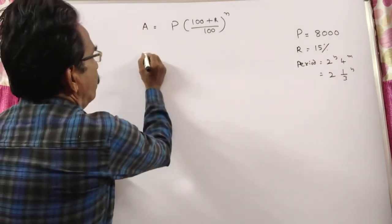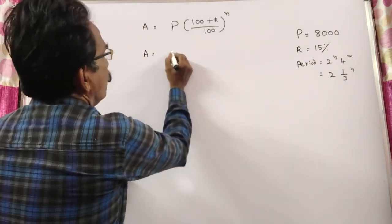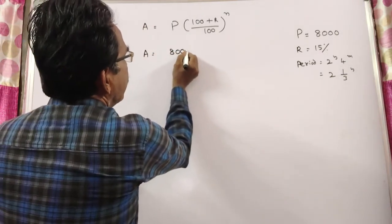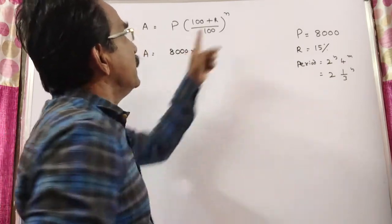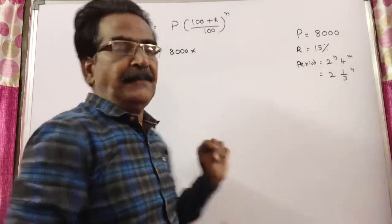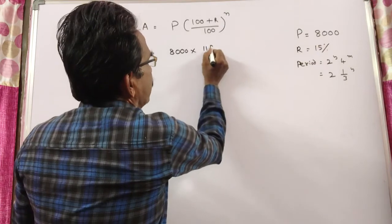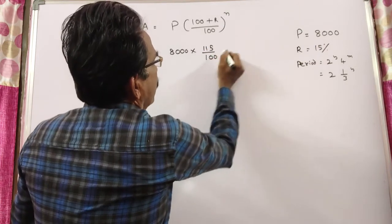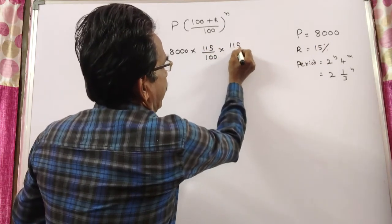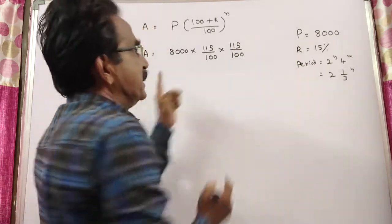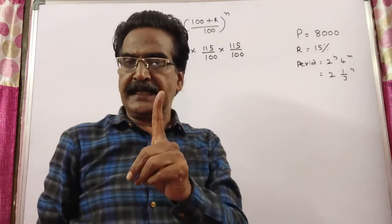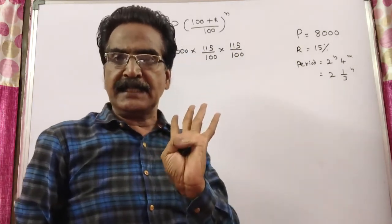So, compound interest amount A is equal to P into 115 by 100, 115 by 100, again 115 by 100. So, by doing this we get the interest for 2 years.